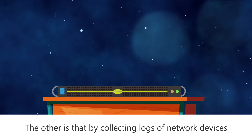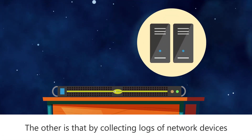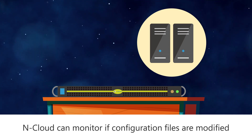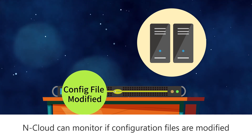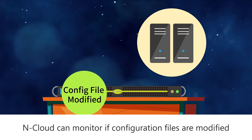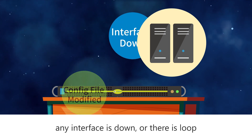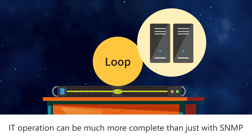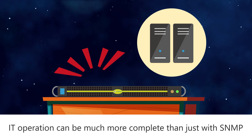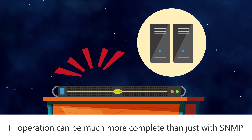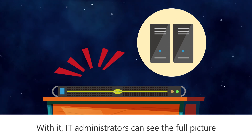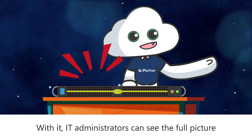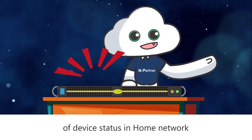The other example involves collecting logs of network devices like switches. nCloud can monitor if configuration files are modified, any interface is down, or there is a loop. IT operation can be much more complete than just with SNMP. With it, IT administrators can see the full picture of device status in the home network.